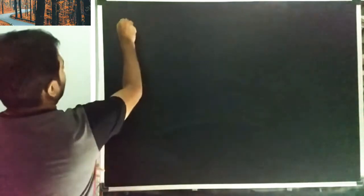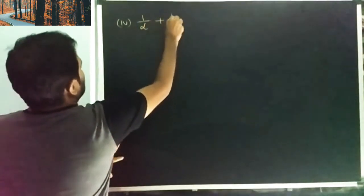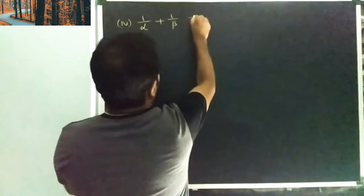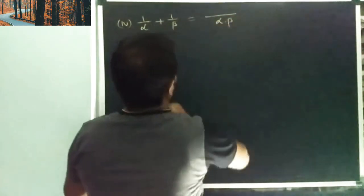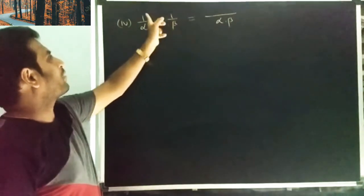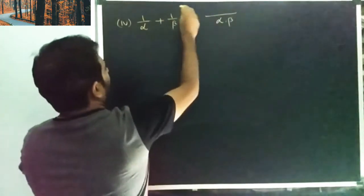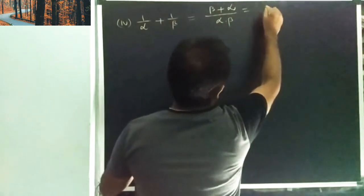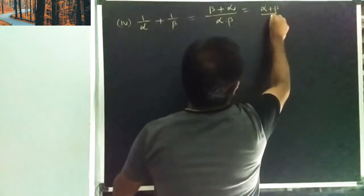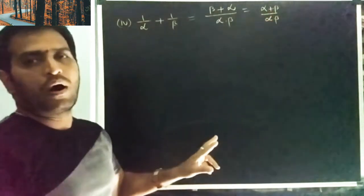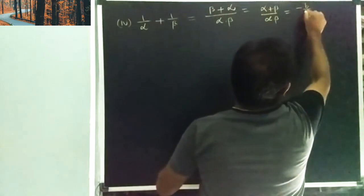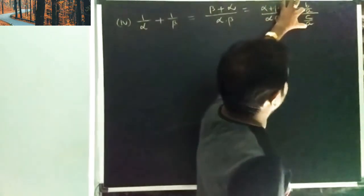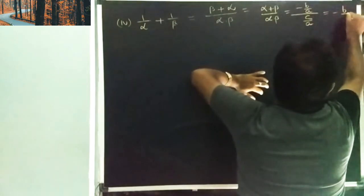Fourth one: one by alpha plus one by beta. Taking the LCM — cross multiply — beta plus alpha over alpha beta. This can also be written as alpha plus beta by alpha beta. Substituting: alpha plus beta formula gives minus b by a, divided by alpha beta formula c by a. The a's cancel, giving minus b by c.